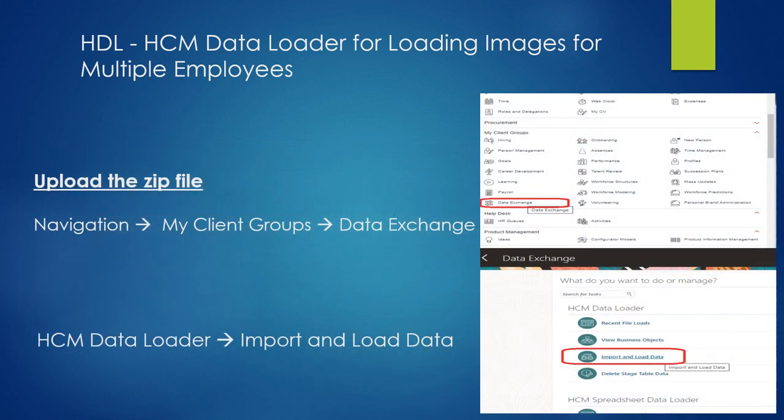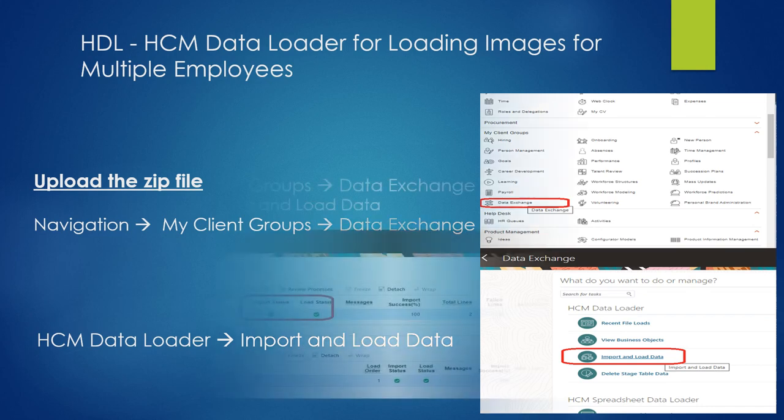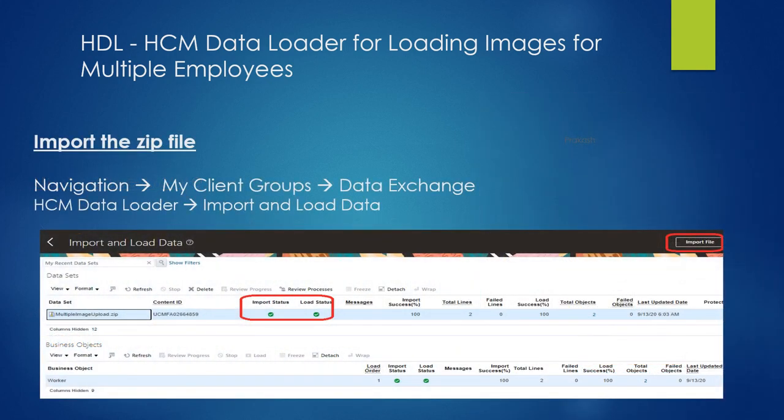Now it's time to upload the zip file. The navigation for uploading will be: My Client Groups, then Data Exchange. Once you click on Data Exchange, it will take you to the Data Loader page. From the Data Loader page, you can see a menu called Import and Load Data — click on that. Now the page will open as you are seeing on the screen.